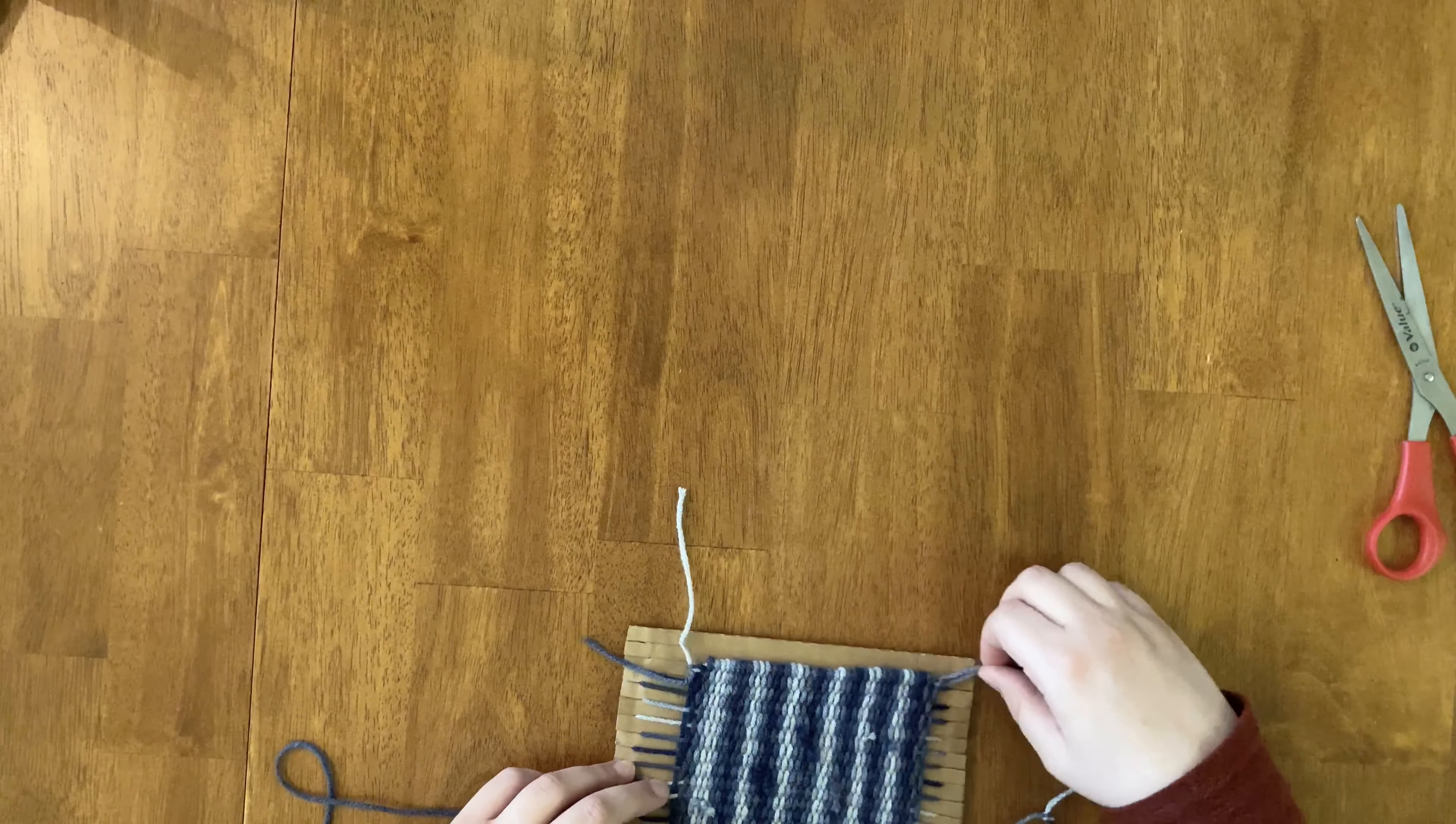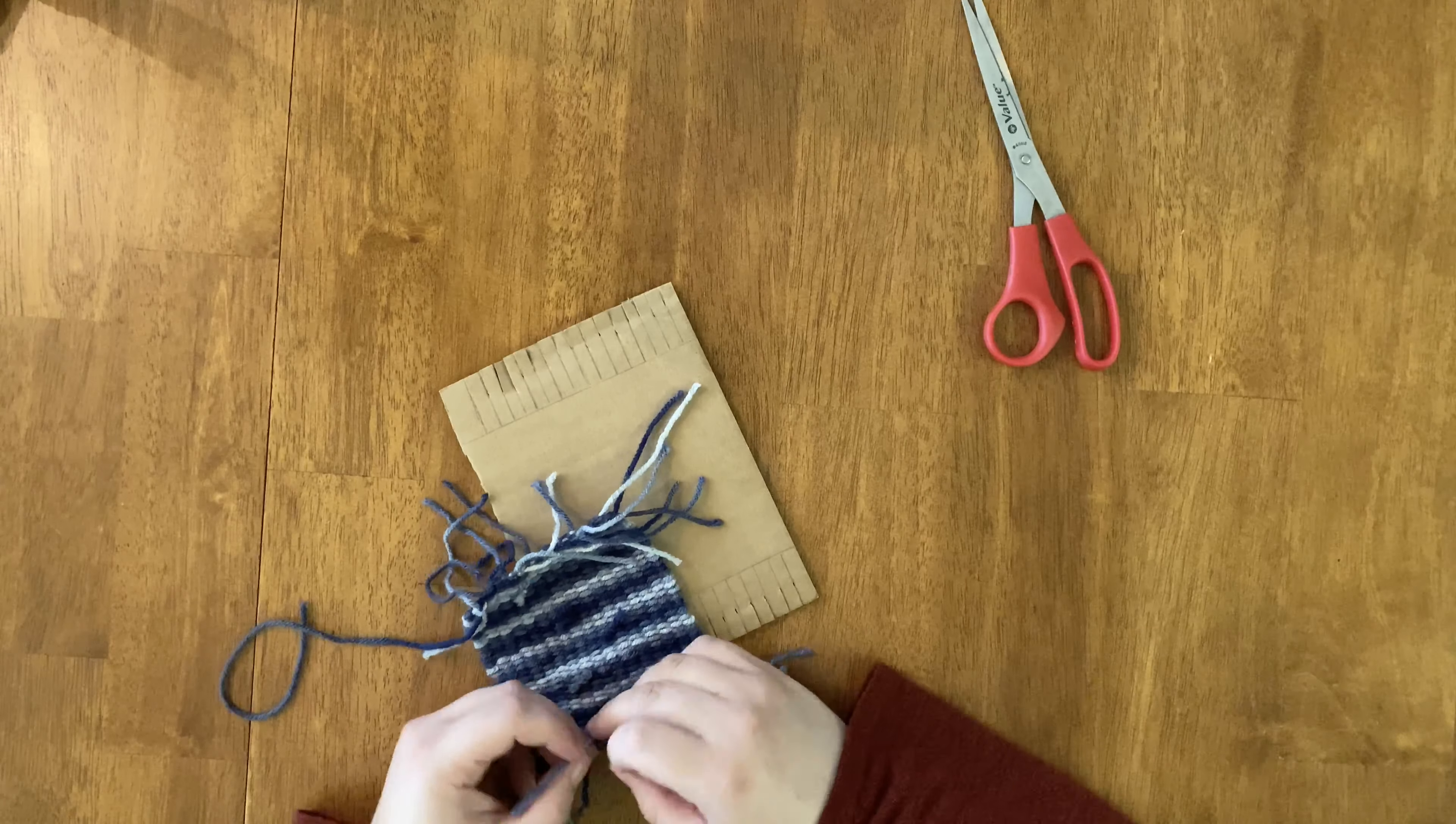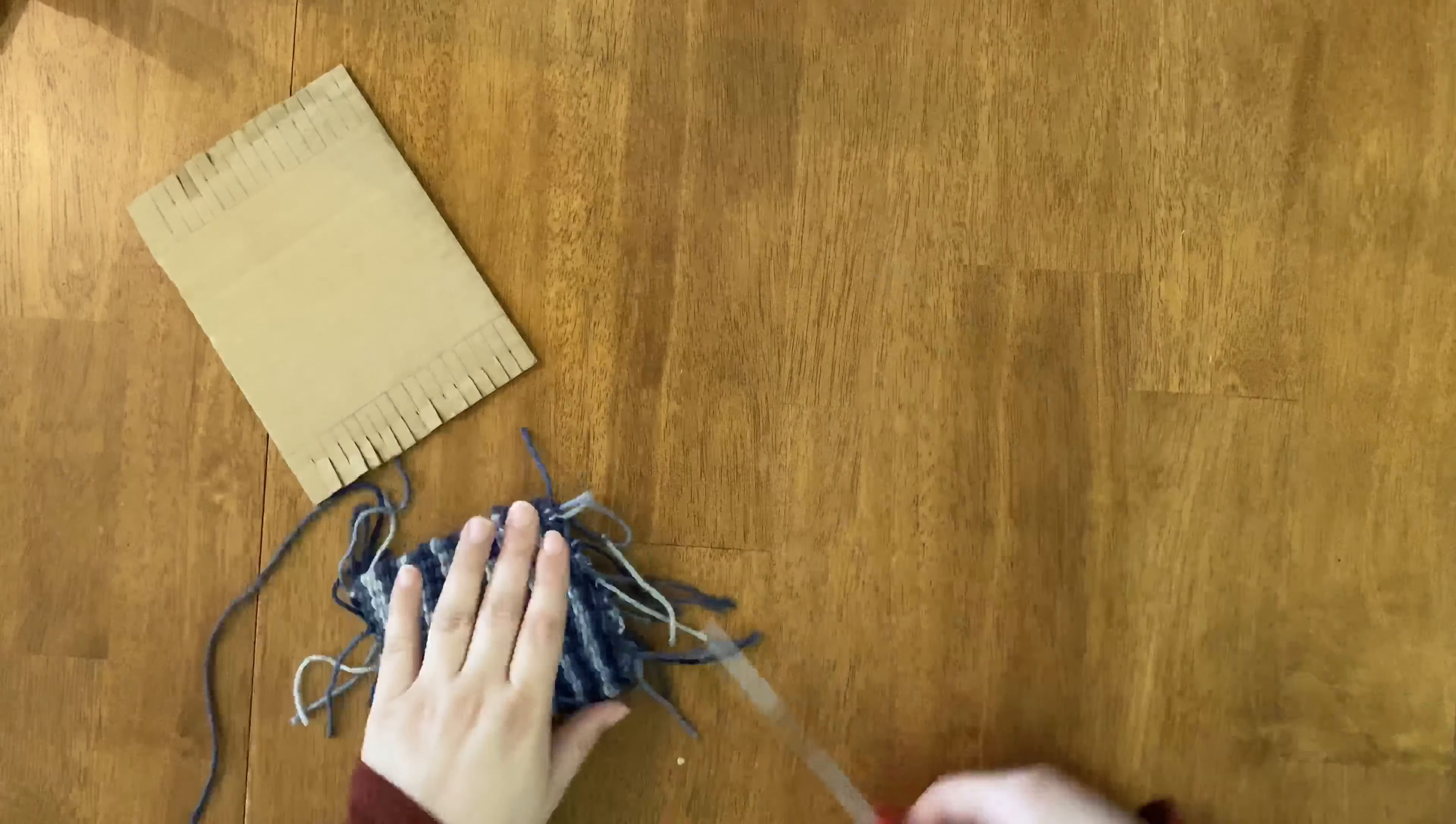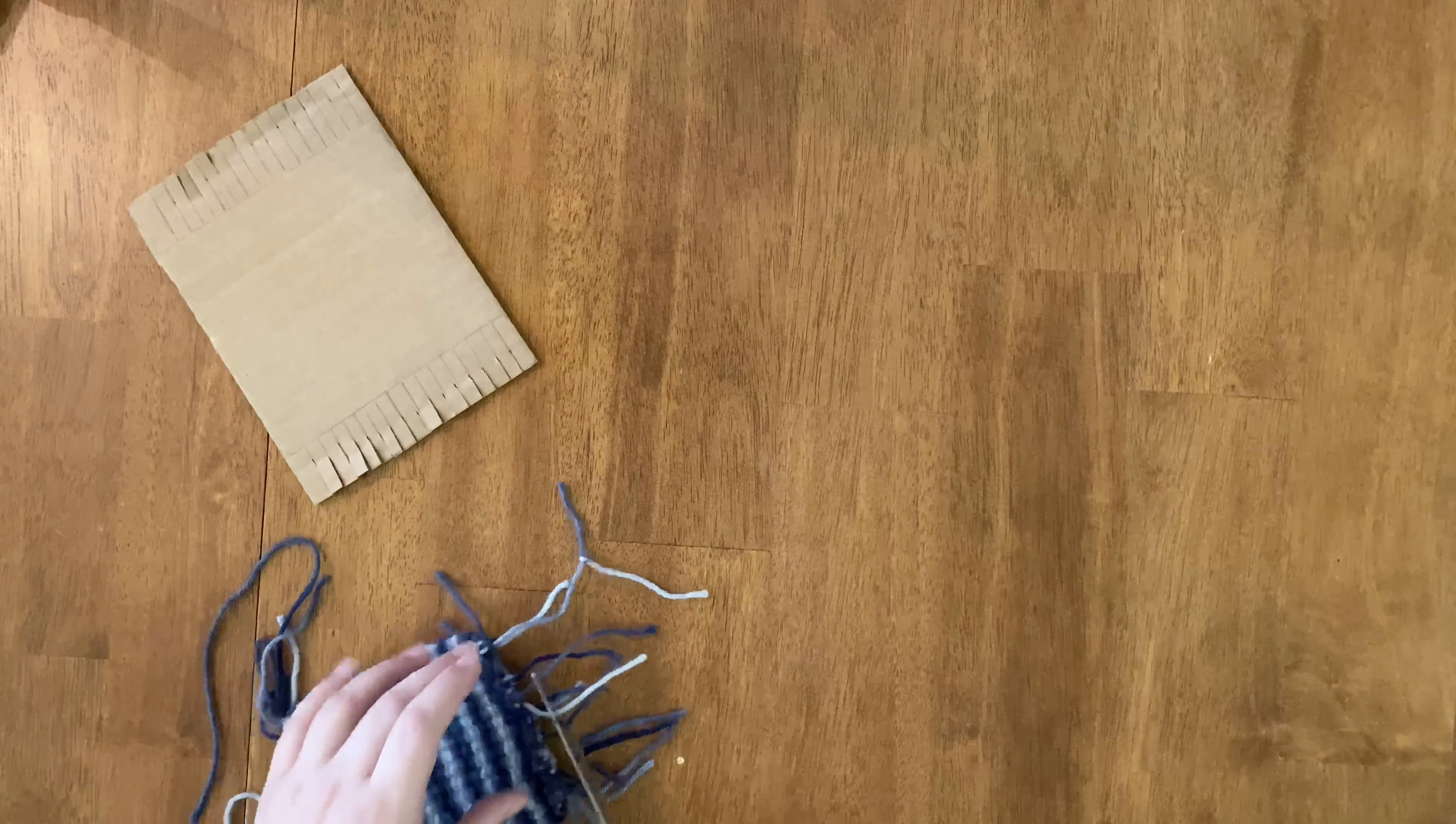Work slowly and focus on one knot at a time. Once you finish cutting all of your warp strings and tying all of your knots, your weaving is basically finished. All that's left to do is to trim the ends of your warp strings. I like to use them as a decorative fringe on my weaving projects. Make sure not to cut too close to your knots or else your knots might come undone.